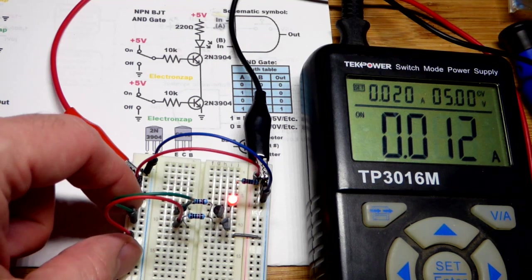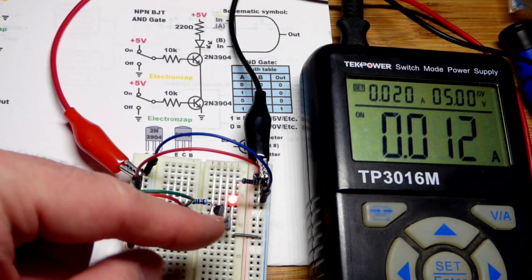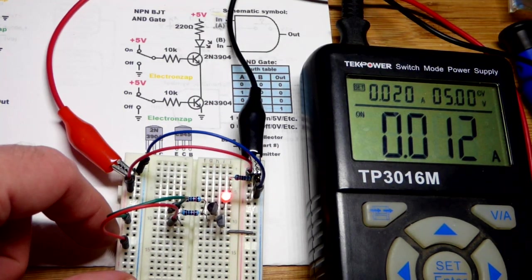The only time the LED is on is if all of the transistors are on. There's only two of them here, so we got two. If you had three, a third transistor in series right there, all three of them would have to be on.